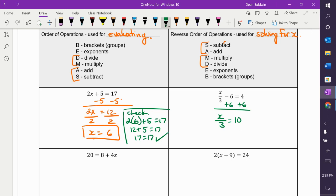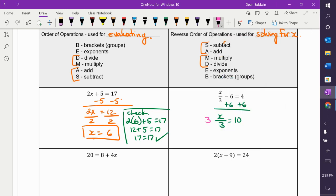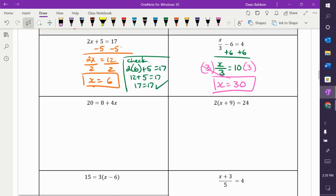X over 3 is what operation? Division. What's the opposite of division? Multiplication. So, you multiply both sides by 3. Those 3's go away. And I'm left with X is equal to 30. I'm not going to do the check. I'm going to let you do that at another time.